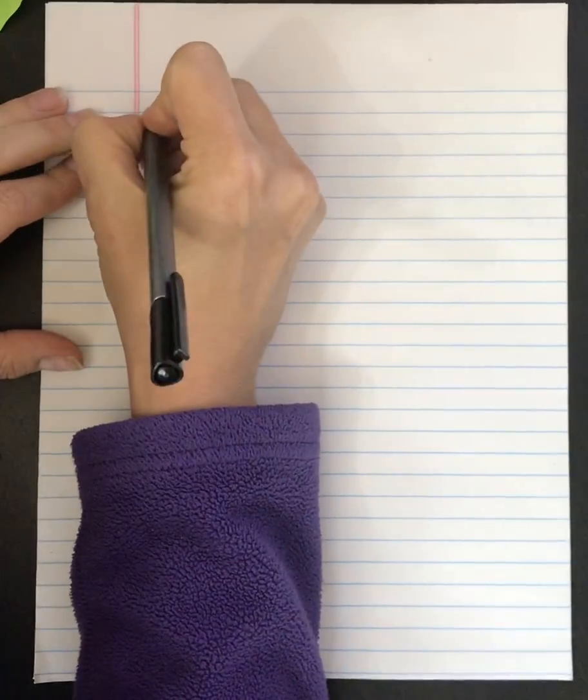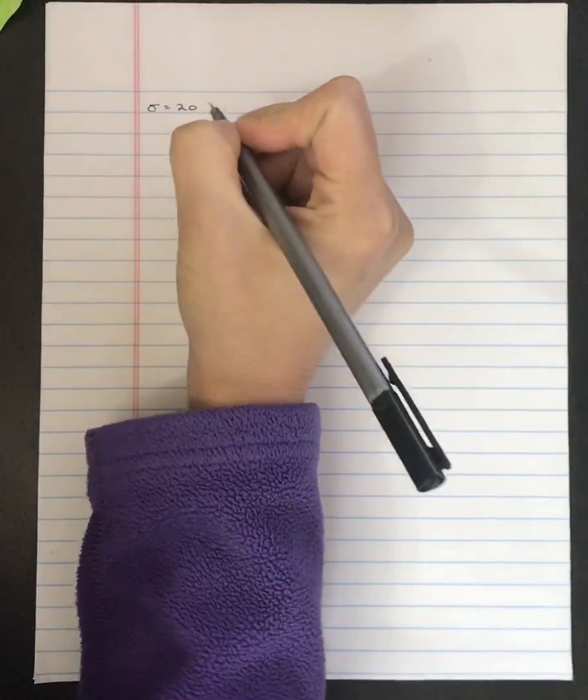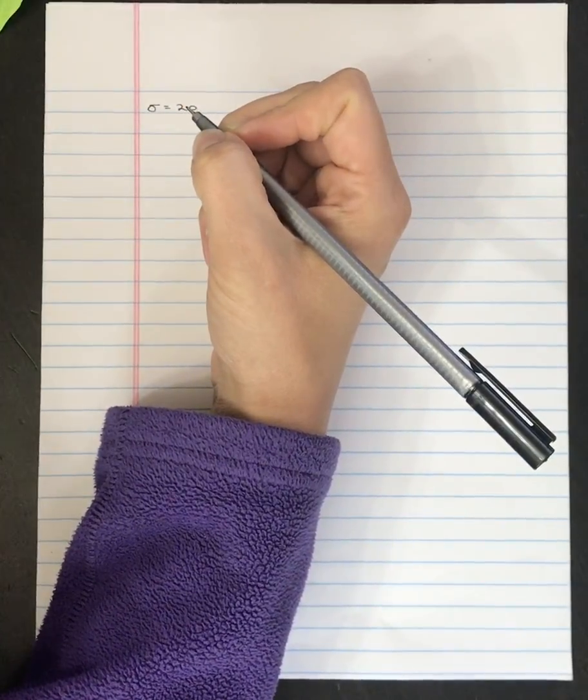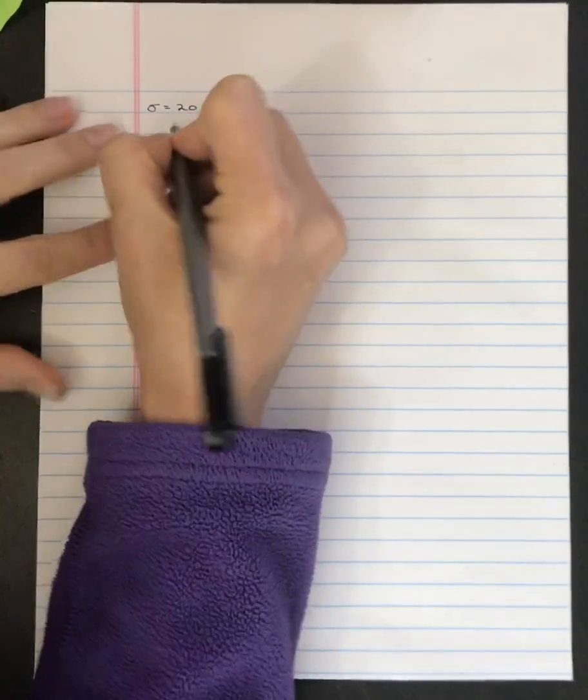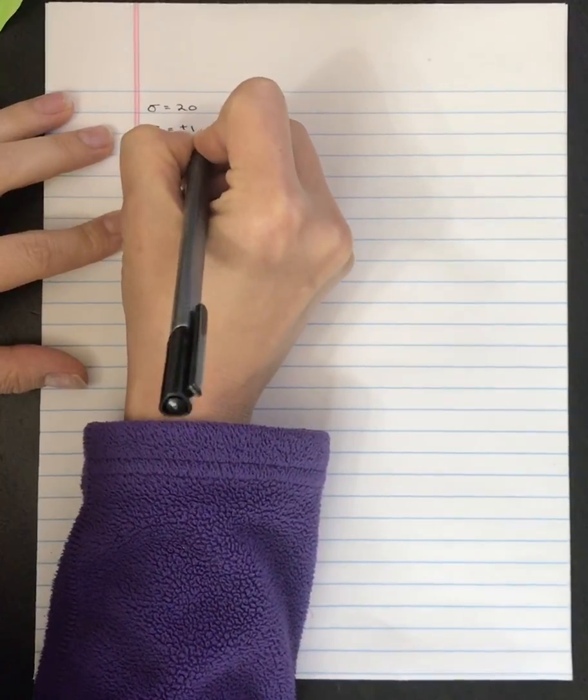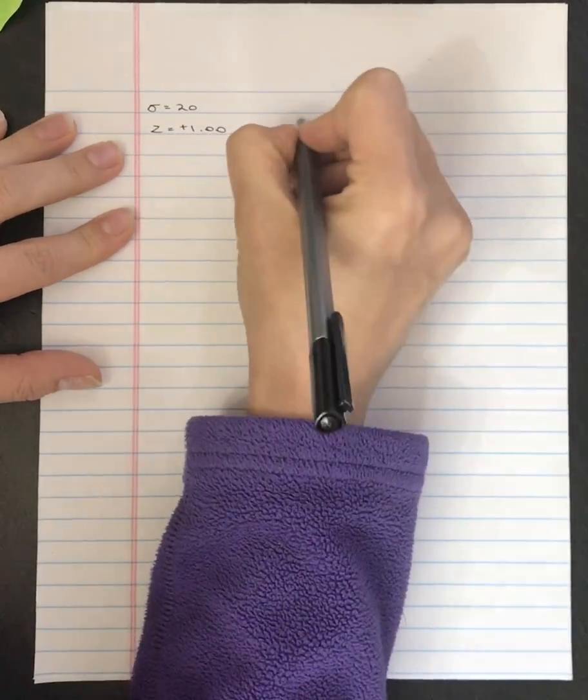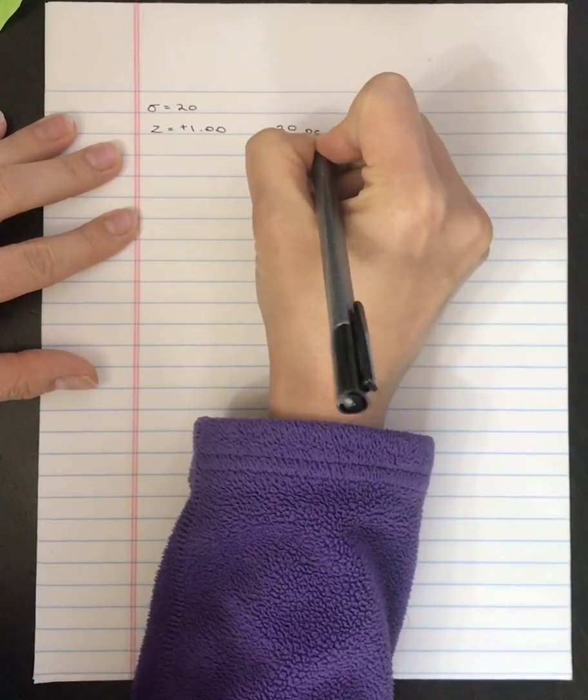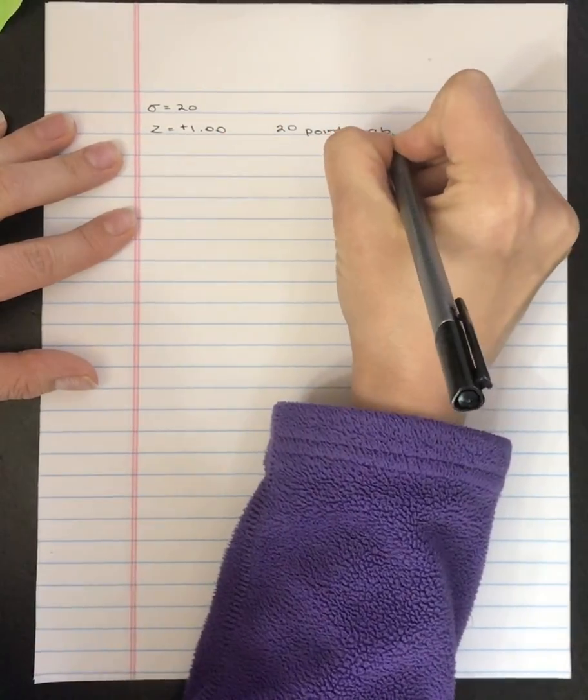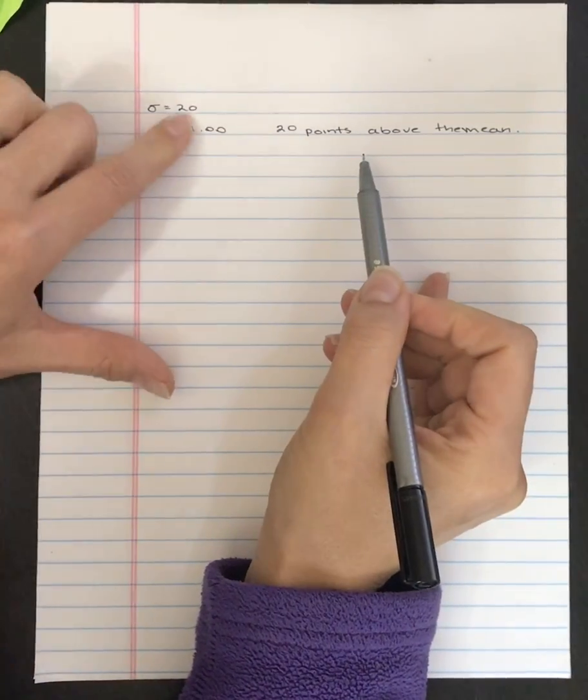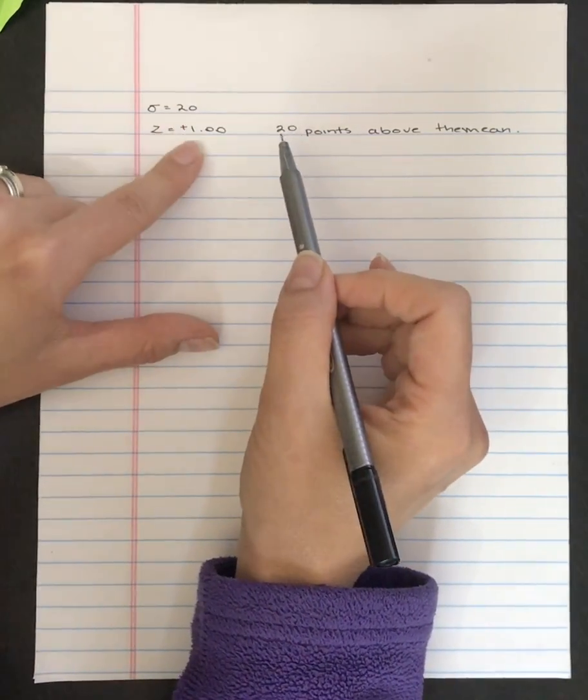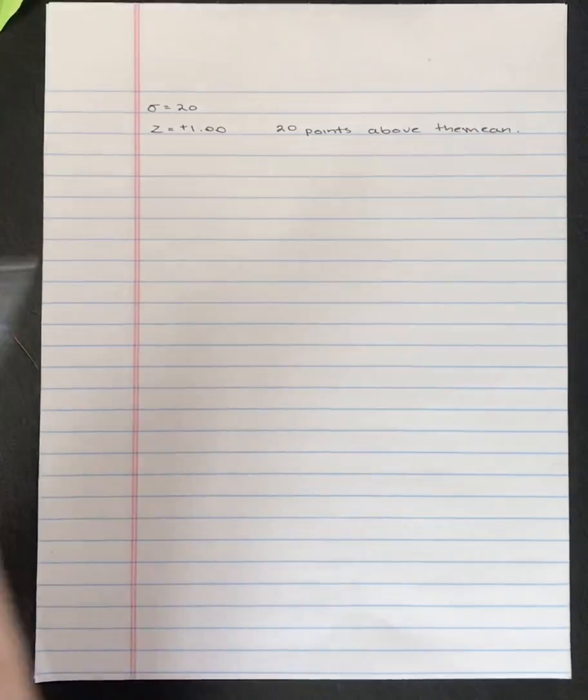The question states, for a distribution with a standard deviation of 20, describe the location of each of the following z-scores in terms of its position relative to the mean. For example, a z-score of equal to plus 1.00 is 20 points above the mean. It's above the mean because it's plus 1, and it's 20 points because a z-score of 1 is one standard deviation. The positive means it's one standard deviation above the mean.